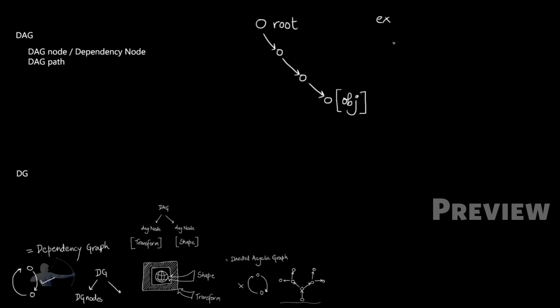For example, if there is a cube, poly cube, which is a parent of poly plane, which is a parent of sphere. And for Maya to determine the world space location of this sphere, it would have to have the complete DAG path. And the reason why is because if the cube is translated